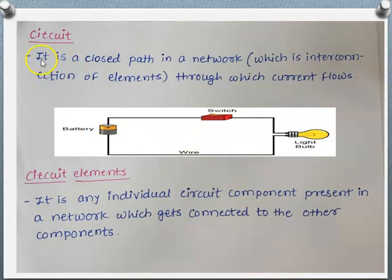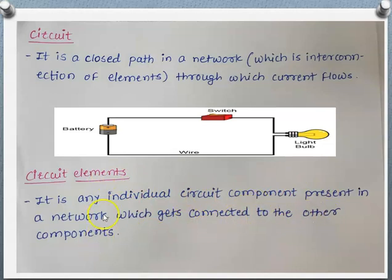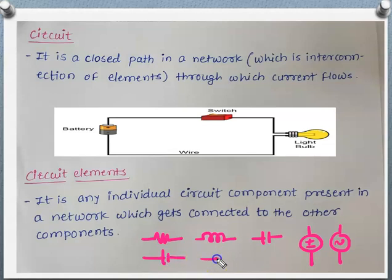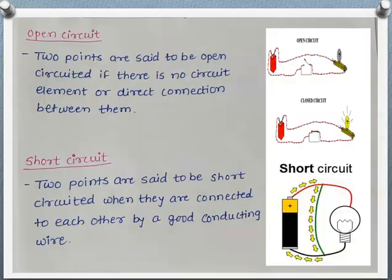When the switch is closed, the battery gets connected to the light bulb and current will flow — this is a simple closed circuit. Circuit elements are individual circuit components present in a network. For example, the battery, switch, and light bulb are circuit elements. Similarly, a resistance, inductor, capacitor, AC voltage source, DC voltage source, cell, or battery are all examples of circuit elements.